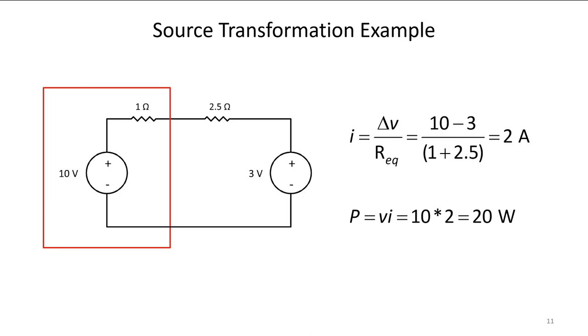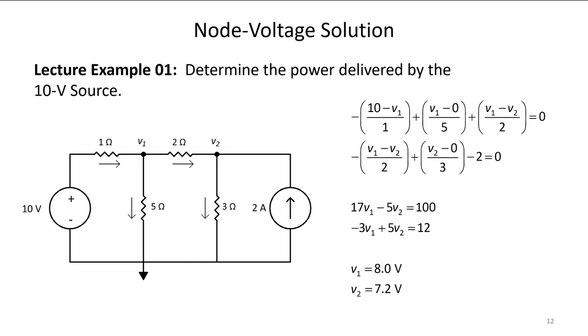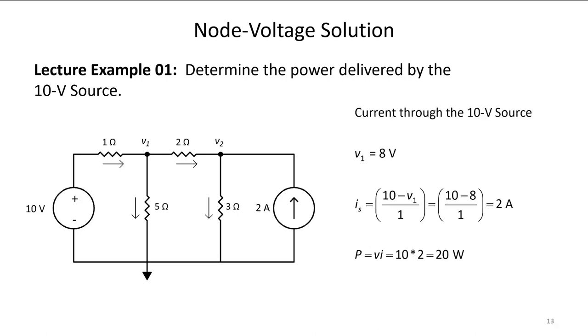Taking a look at this problem in a different way, if we solved it with node voltage, we work through and find that V1 is equal to 8 volts and V2 is equal to 7.2 volts. If V1 is 8 volts then I can calculate the current across the one ohm resistor in the upper left hand corner. 10 minus 8 divided by 1 is 2 amps again, so I get a 2 amp load through the 10 volt source.